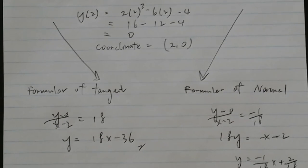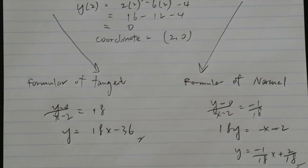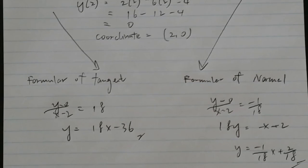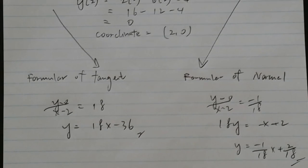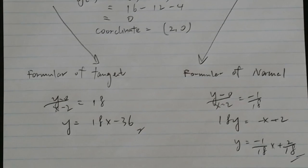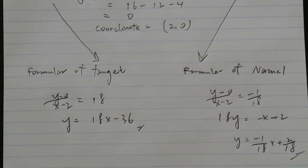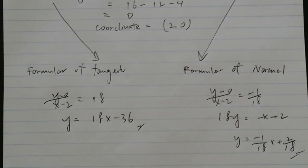For the normal, y minus 0 divided by x minus 2 equals to minus 1 divided by 18. 18y equals to minus x plus 2. And finally, y equals to minus 1 over 18x plus 2 and over 18. This is the formula of normal.